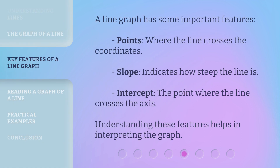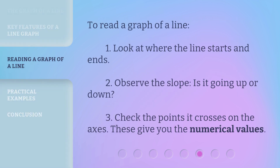A line graph has some important features. First, identify the points. Second, observe the slope — is it going up or down? Third, check the points it crosses on the axes. These give you the numerical values.